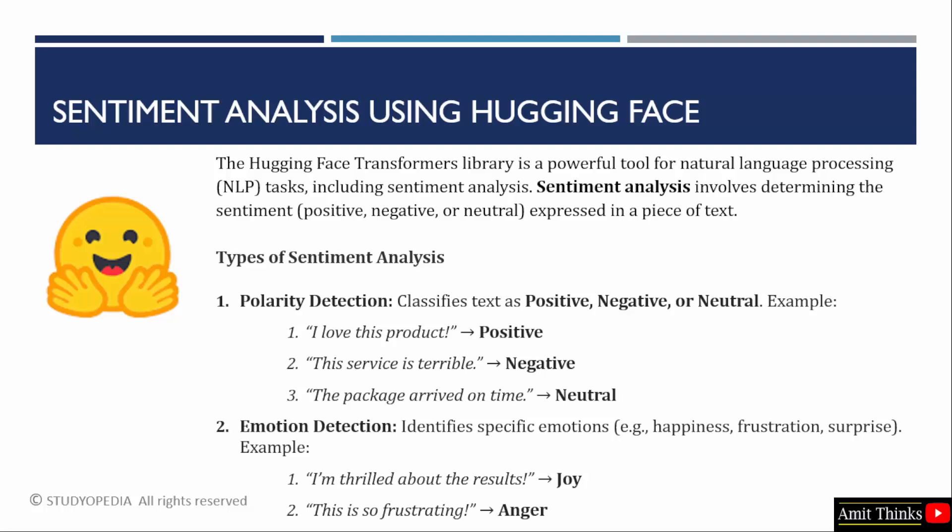Next comes emotion detection. For example, 'This is not good, this is pathetic, this is so frustrating' — that is anger. And joy is expressed by a sentence like 'I am thrilled about the results.' So emotion detection includes happiness, frustration, and other emotions.